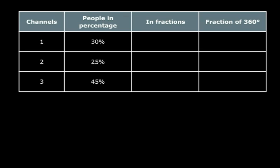In the first column you have the channel 1, 2 and 3. Second column gives you the percentage of people who preferred the respective channel, 30, 25 and 45%. In the third column, we find the corresponding fraction. So 30% is 30 by 100 or 3 by 10. 25% is 25 by 100 or 1 by 4 and similarly 45% is 9 by 20.